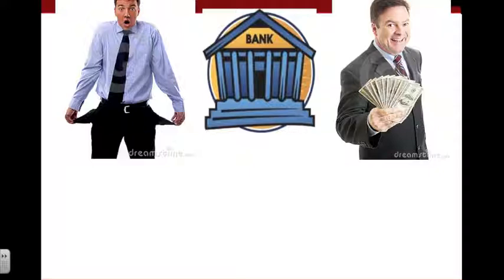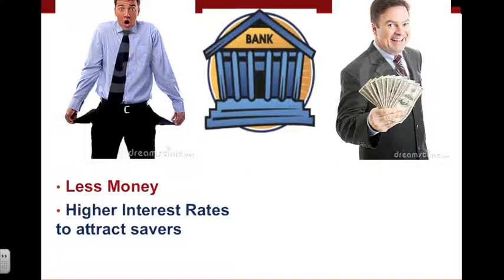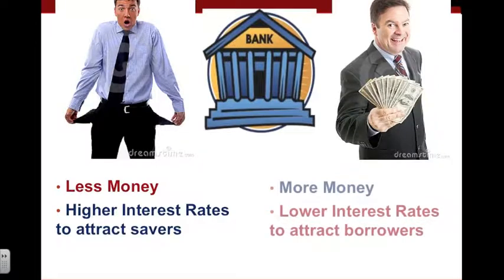What happens if a bank has less money? If a bank has less money, less liquidity, then they need to get the public's money in order to make loans. Banks' primary function is to lend money or make investments so they can earn money. If the banks have less liquidity, they're going to be more likely to offer higher interest rates to attract potential savers. What happens if a bank has more money and plenty of liquidity? Then it doesn't really need your money, which brings interest rates down — less desirable for savers, more desirable for borrowers.